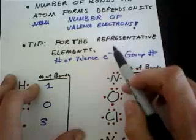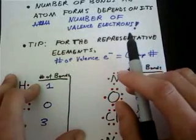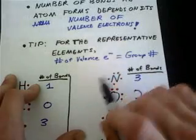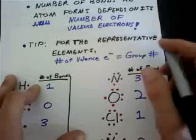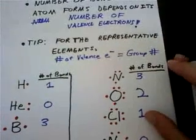When I say representative elements, I'm not talking about the transition metals or the inter-transition metals. I'm talking about groups 1A, 2A, 3A, 4A, 5A, 6A, 7A, and the noble gases too. So I'm not talking about that big hunk of metal in between.